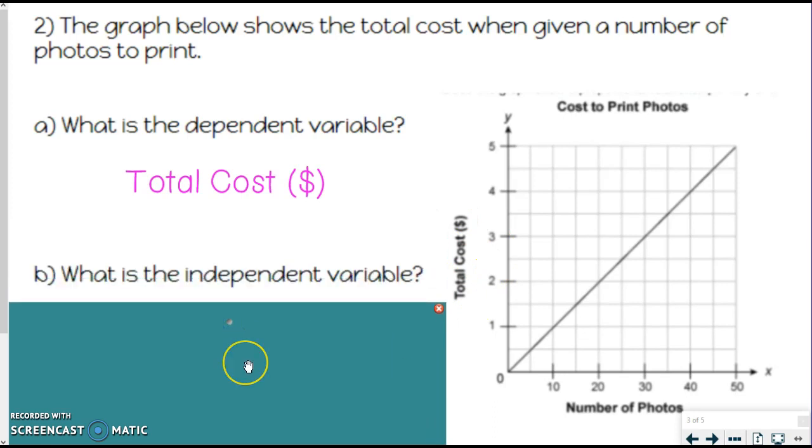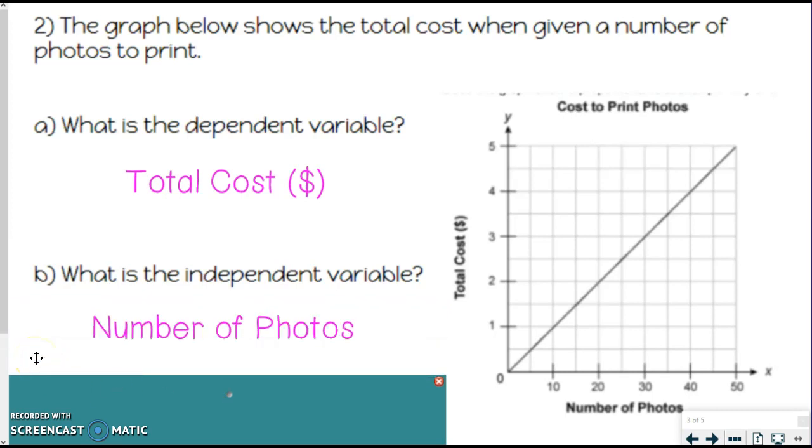So then that means the independent variable, the thing that needs to happen first, or is going to happen regardless of something else, is number of photos. That is going to happen, and then you will determine your cost. And it's on the X-axis, so that's your other key.